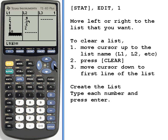If I want to enter another list, I'll just move over to that list. If there's something there already, I can clear it by going to the very top, pressing clear, moving down.